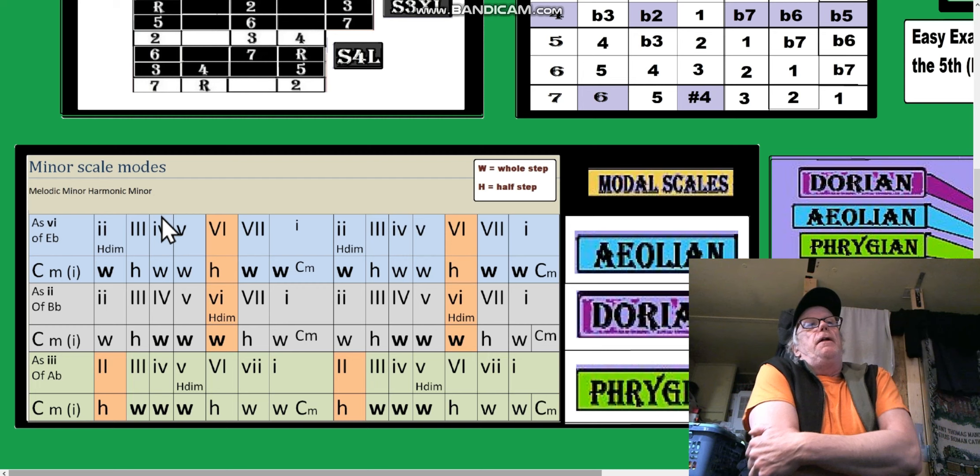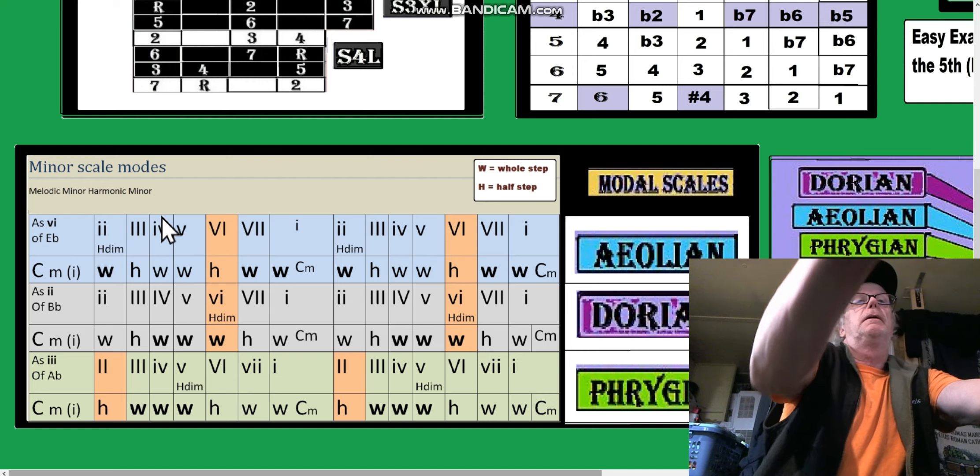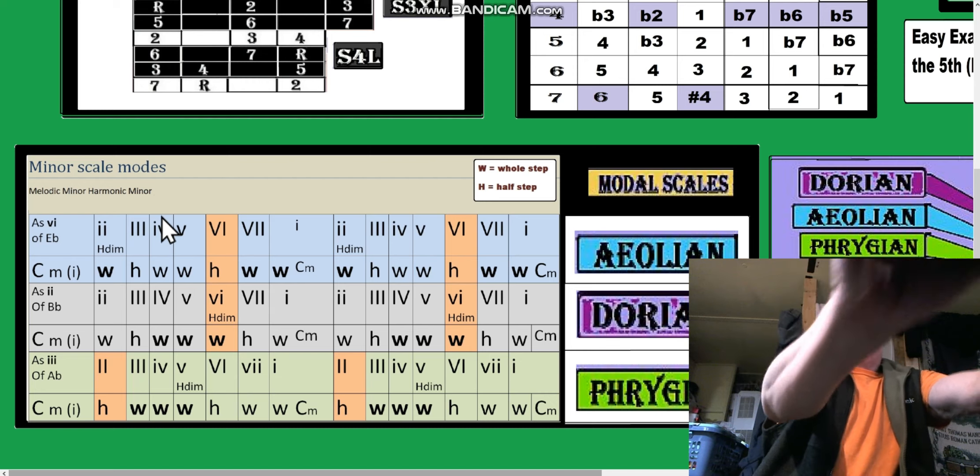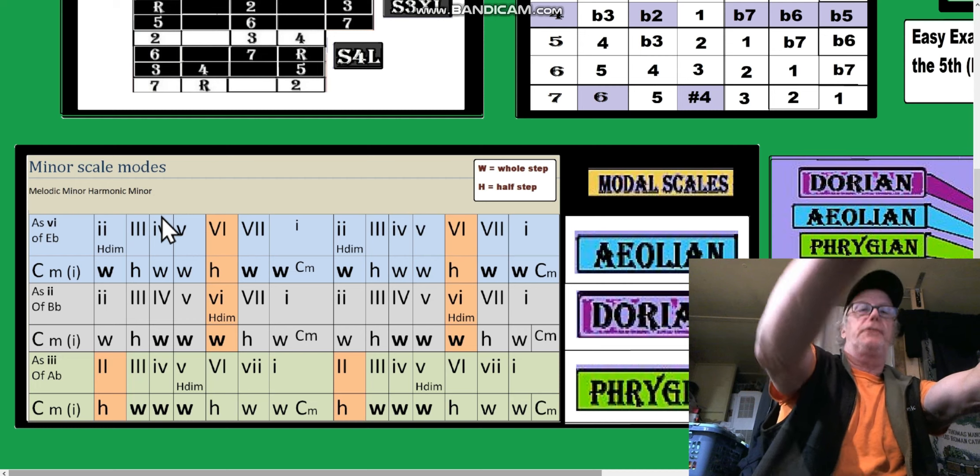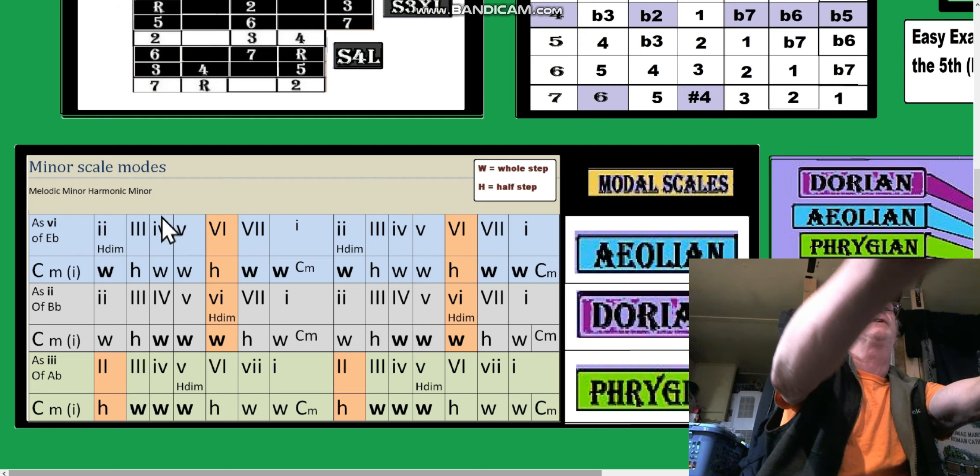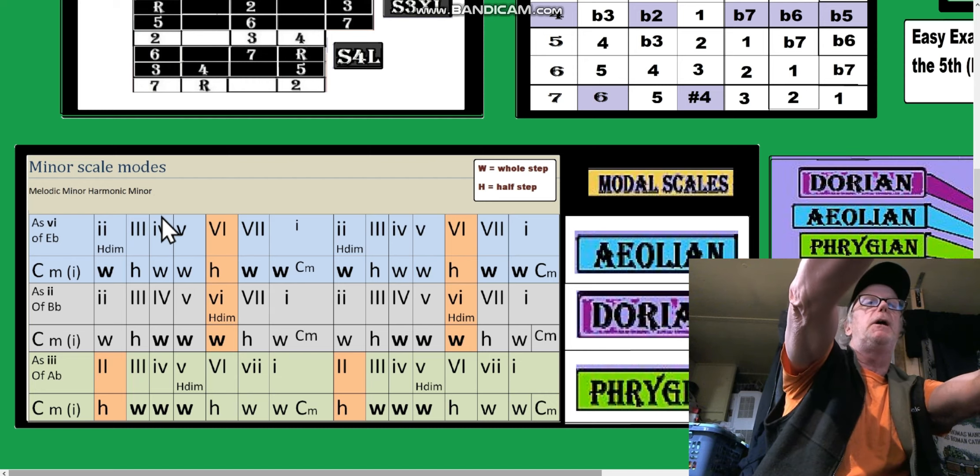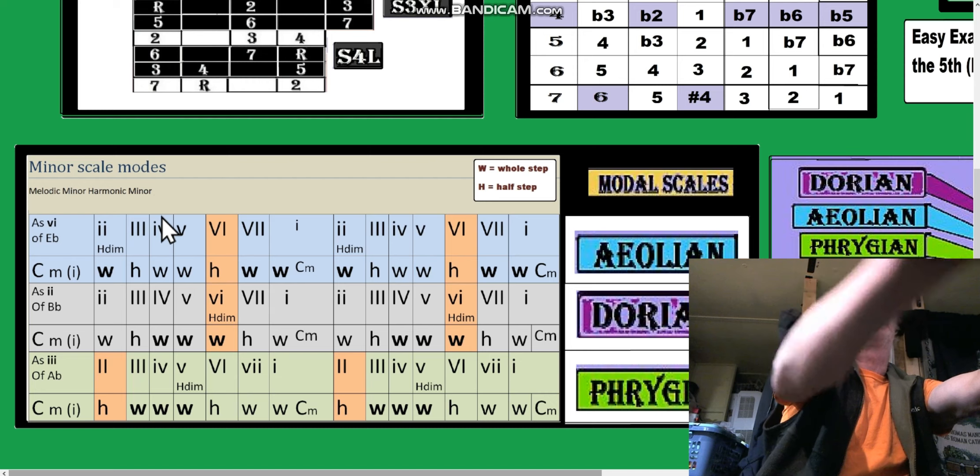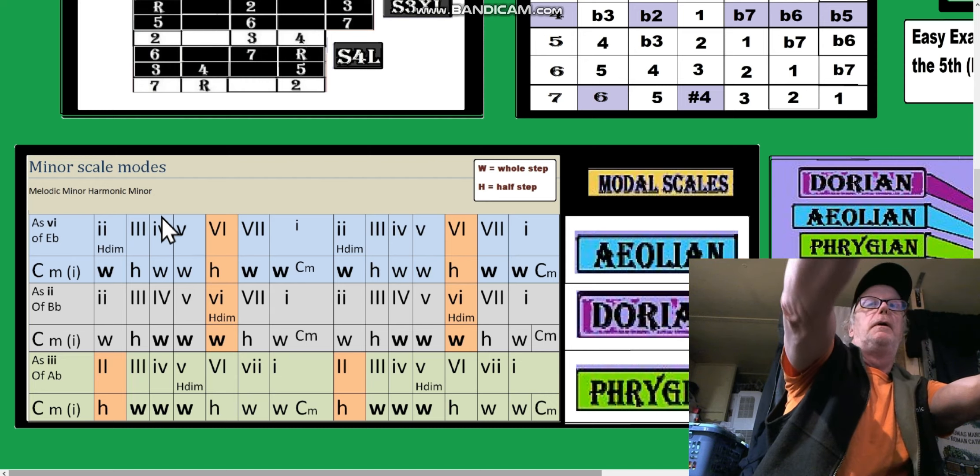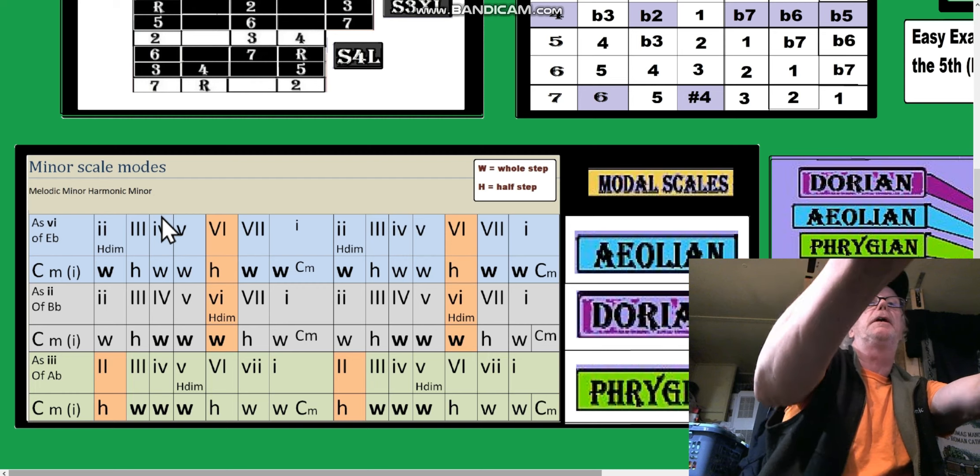You need to know that within a key, say the key of A, that any chord, scale tone chord you build off of that scale is going to be in the A mode. It's going to have its mode. So any of the minor constituents, which would be B minor, okay so you got... C sharp minor, all right, that's going to be the Phrygian minor.